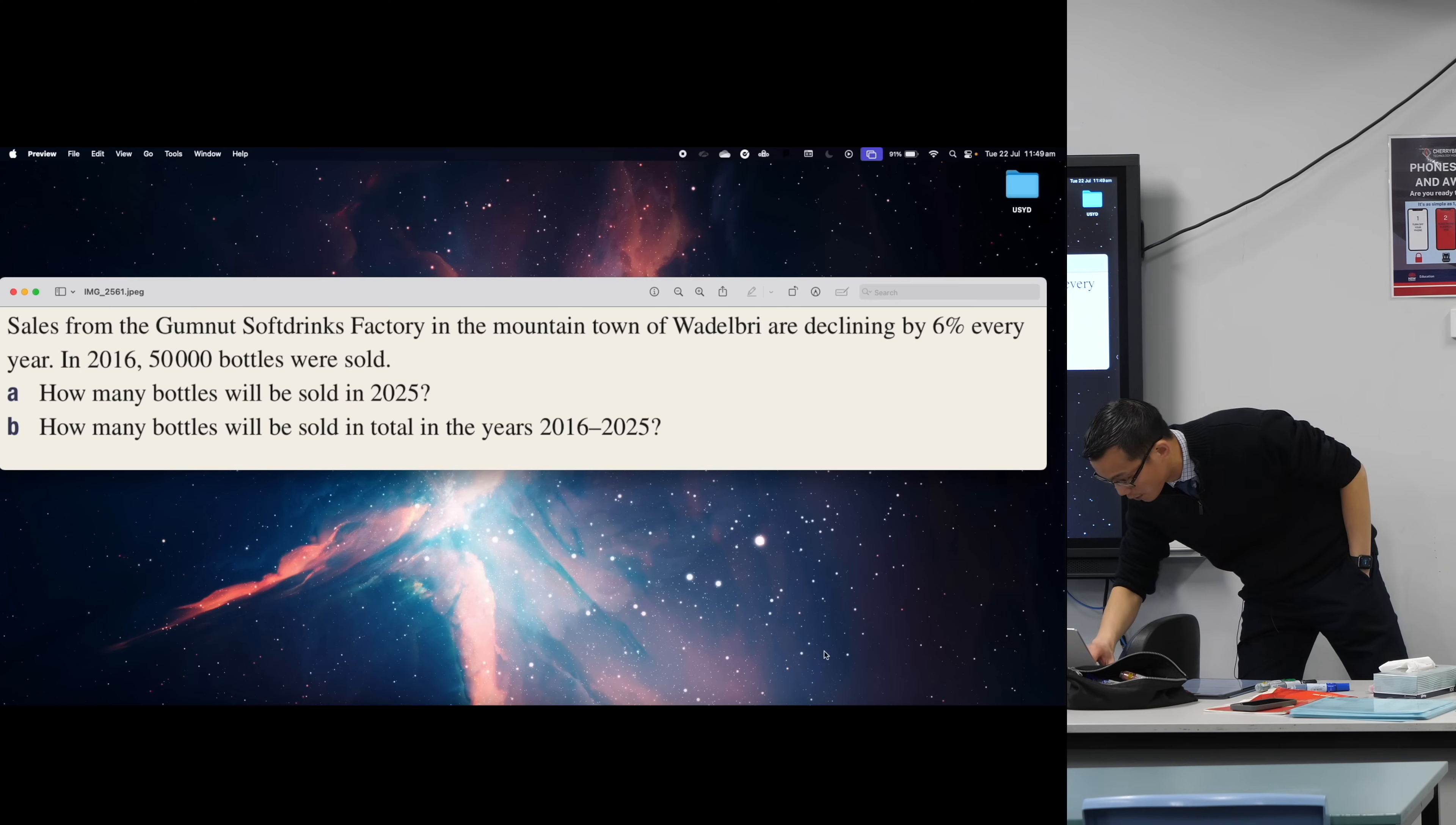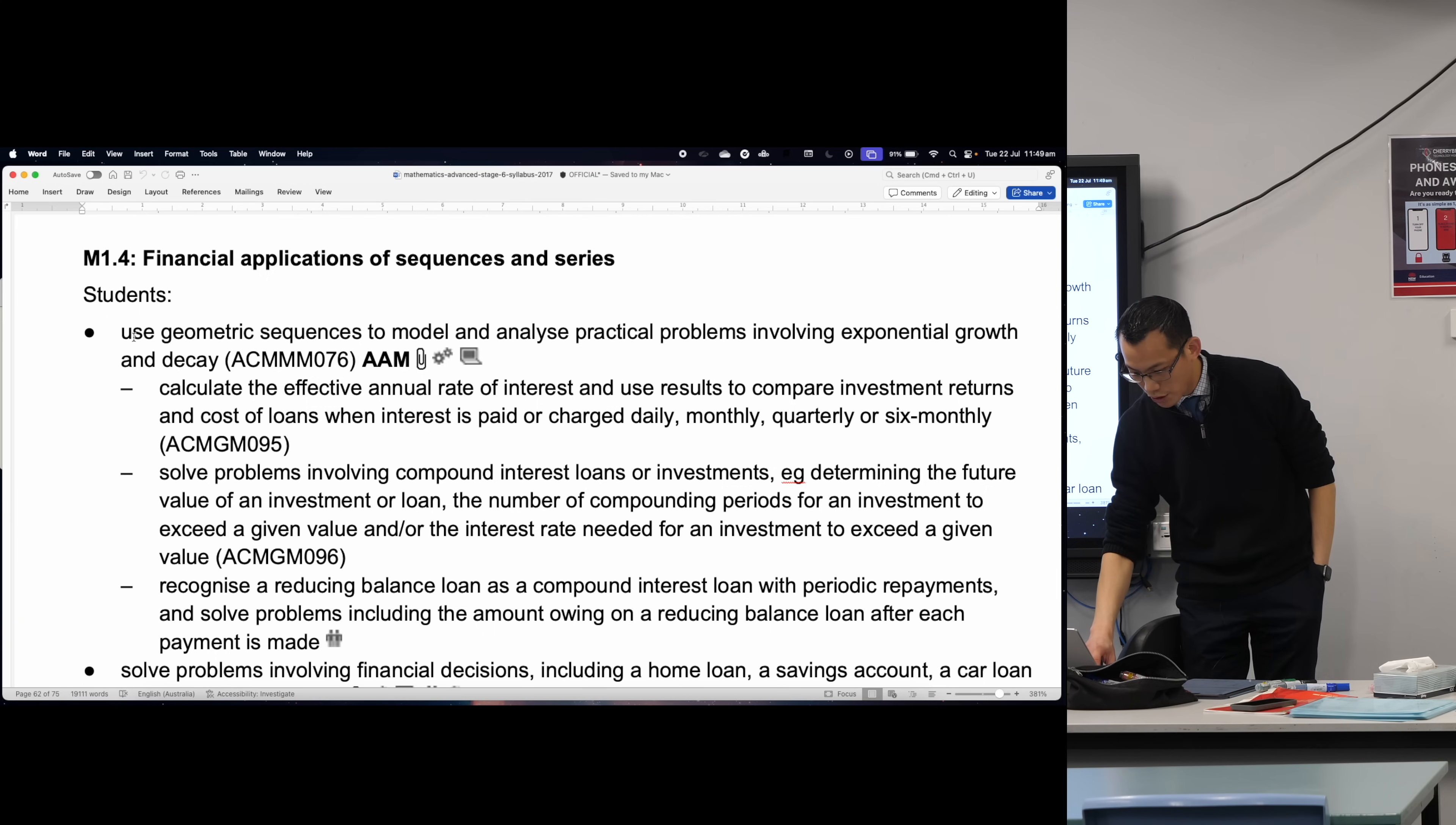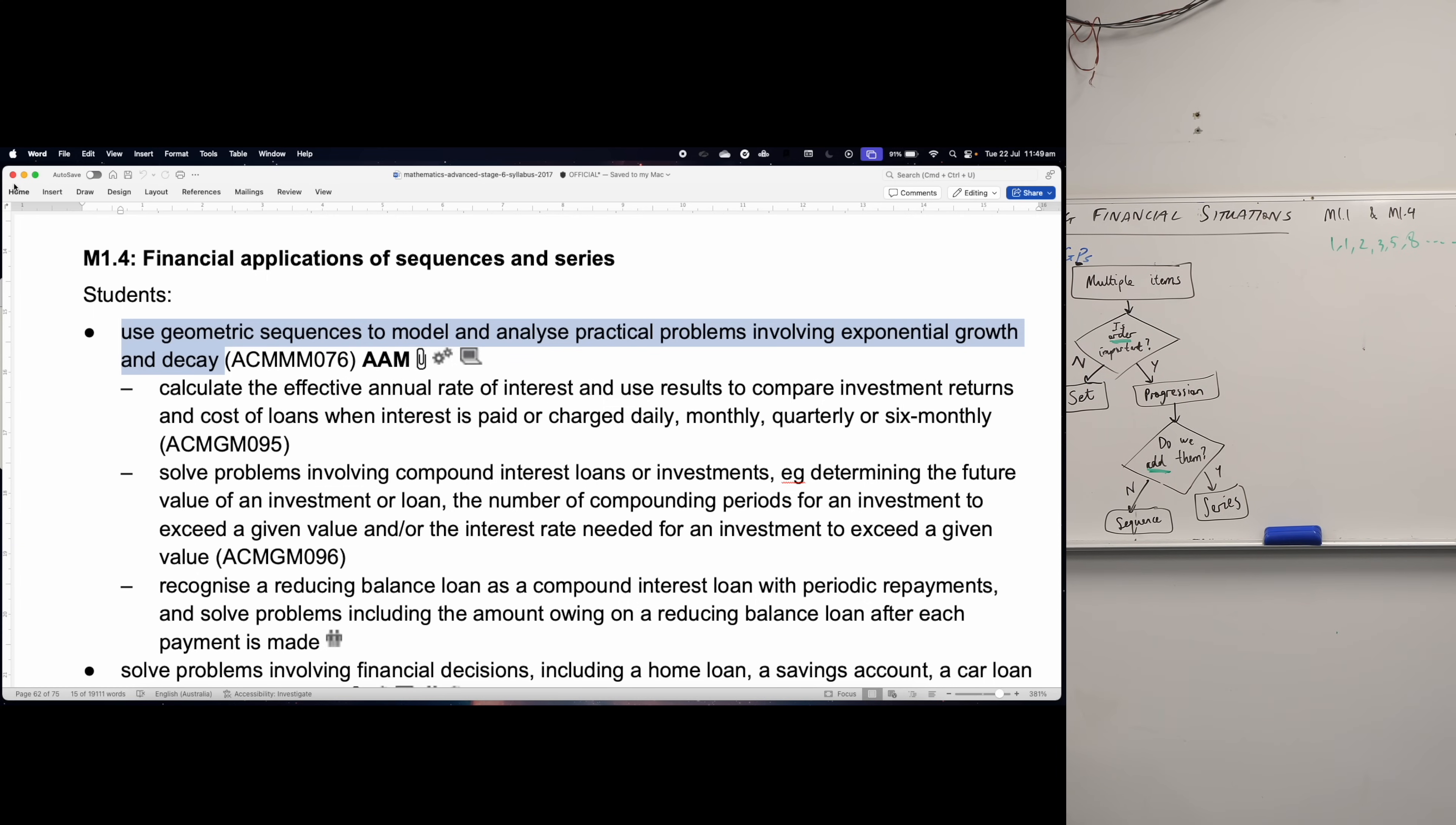As mentioned, M1.1 and M1.4, the common thing is about finance, but actually there are a bunch of questions that are even not financial that are still within the scope of the syllabus. Actually, I should bring it back just to prove it so you know I'm not making it up. Here's M1.4. The title says Financial Applications of Sequence and Series. And then I just want you to have a look closely at this sentence right here. It asks you to use geometric sequences to model and analyze practical problems, any type of situation, regardless of whether it includes money or not. Does that make sense? Involving exponential growth and decay.